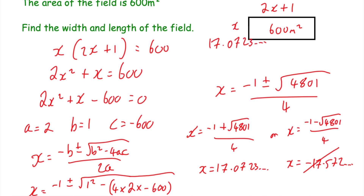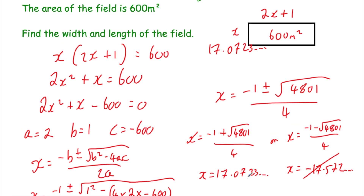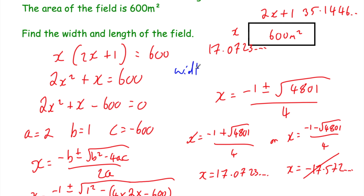We've been asked to find the width and the length of the field. So we take x equals 17.0723..., multiply by 2 and add 1 to get the length: 35.1446... metres. So the width of the field equals 17.07 metres to two decimal places, and the length of the field equals 35.14 metres to two decimal places.